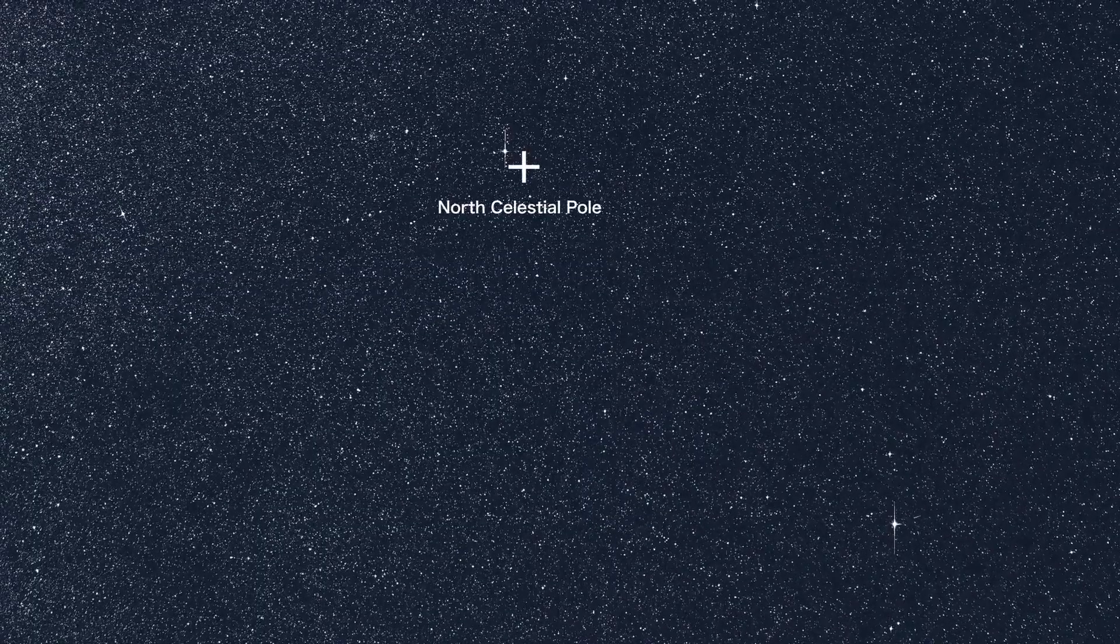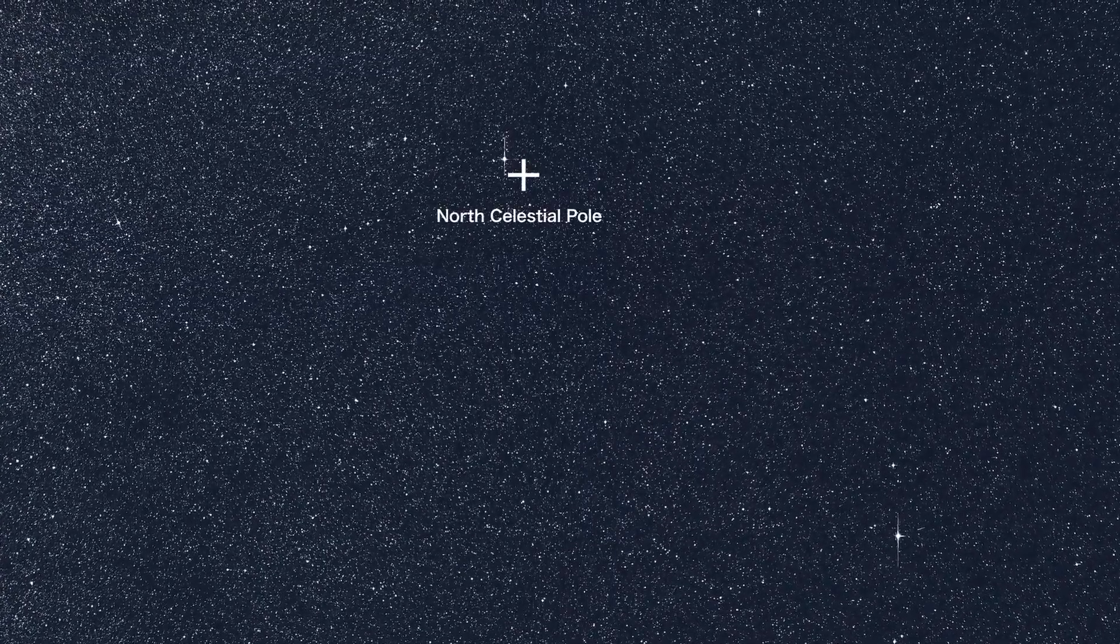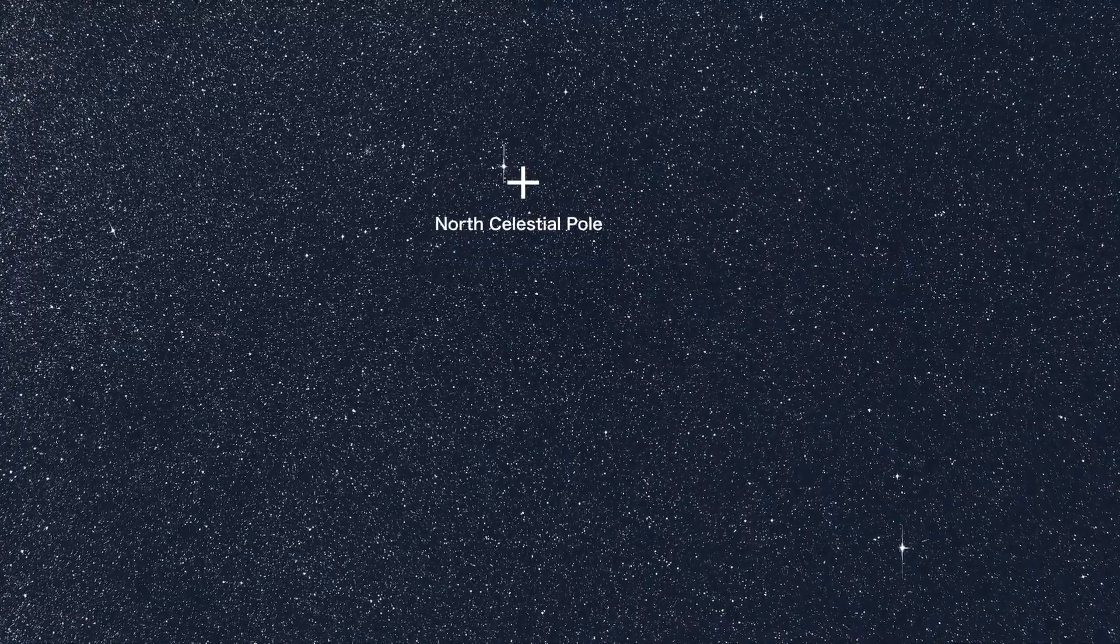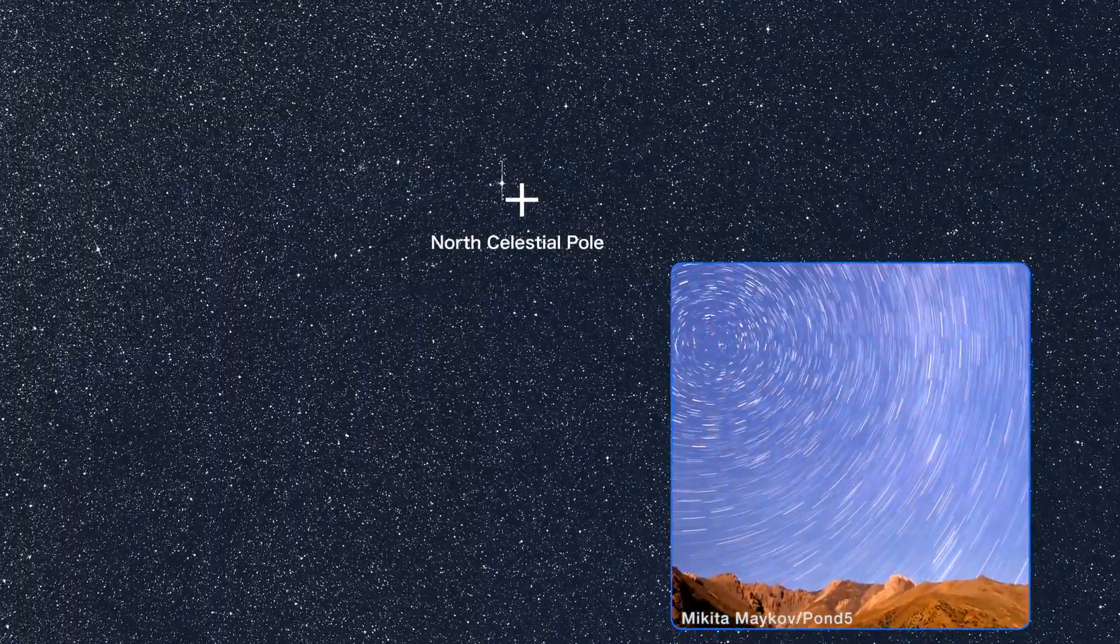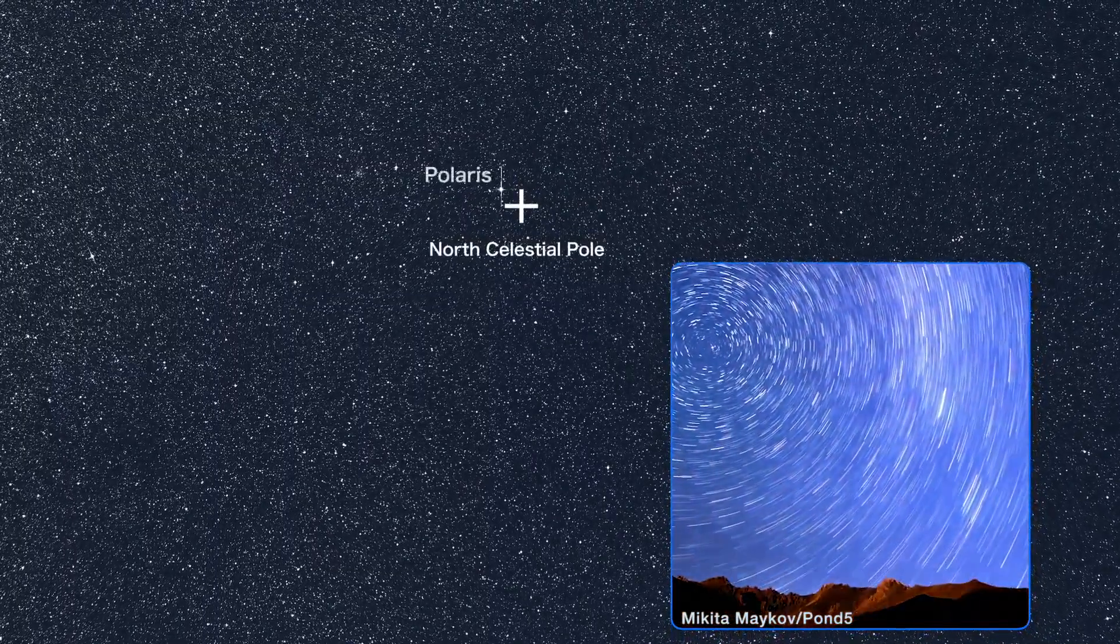More familiar to sky watchers is the North Celestial Pole. This is where the north end of our planet's spin axis intersects the sky. The whole starry vault appears to revolve around this point, conveniently marked by the nearby star Polaris.